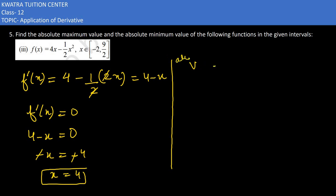So humare paas kya likhenge, value of x. Values of x: 4, and interval kya hai? Minus 2 and 9 by 2. Ab usi ke according humein kya nikalna hai? f of x nikalna hai.